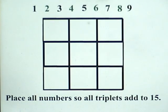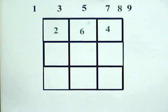To get the solution, remember it is easy. We put the even numbers in the corners: two, four, six, eight.